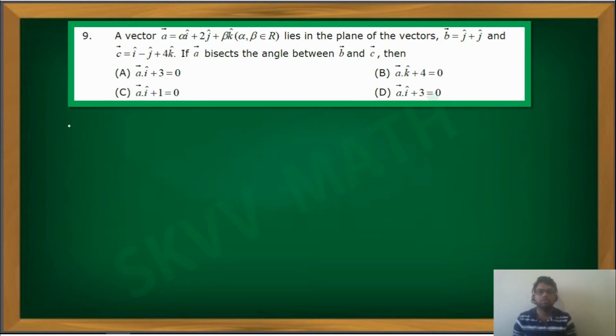Here a vector a bar is given to you. A bar is alpha i plus 2j plus beta k, where alpha, beta are real numbers.